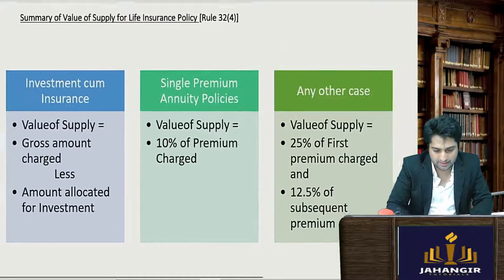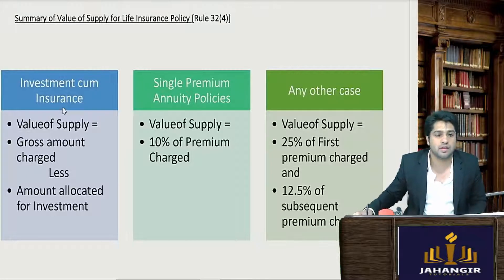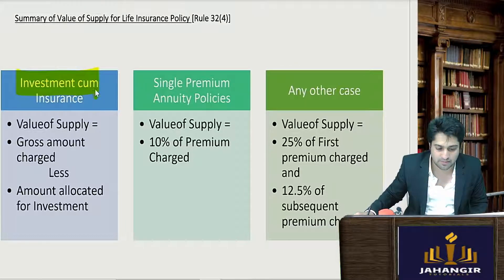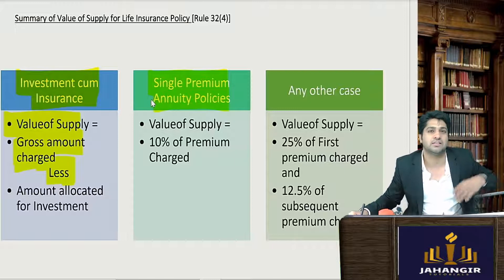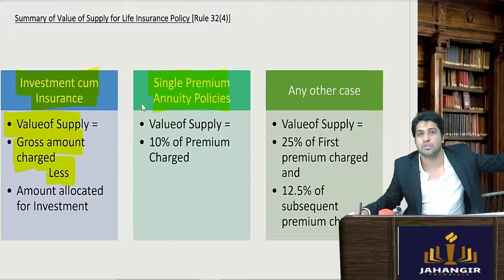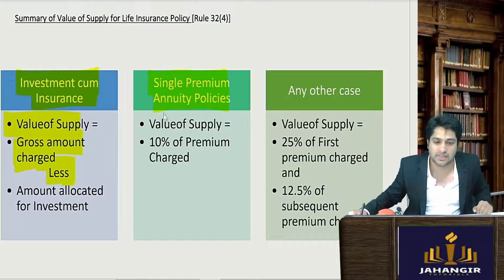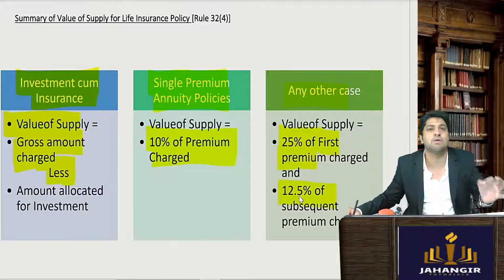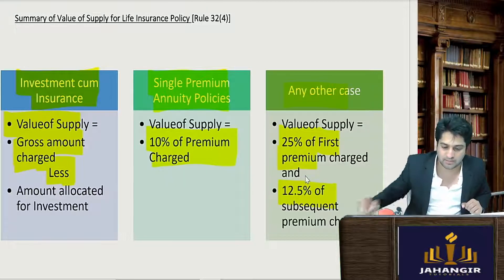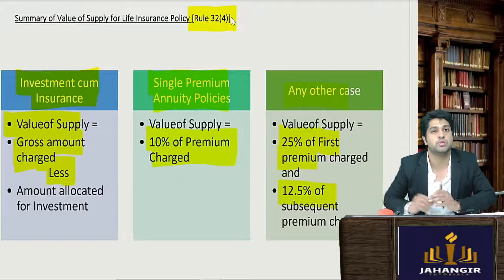To summarize: if it is an investment-cum-insurance policy, the value of supply is the gross premium amount excluding the investment amount. If it is a single premium annuity policy — you pay a lump sum and then receive regular periodical flows in future — it is 10 percent of the premium charged. In any other case, for the first year 25 percent of the premium charged is the value of supply, and in subsequent years it is 12.5 percent. All of this is given in Rule 32, sub-rule 4.